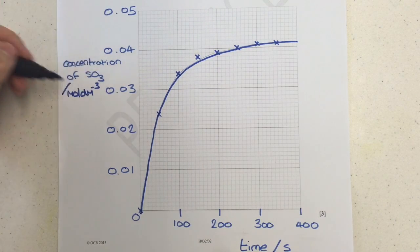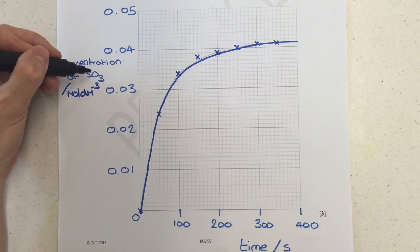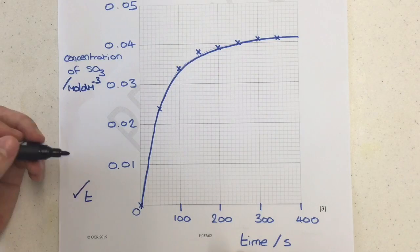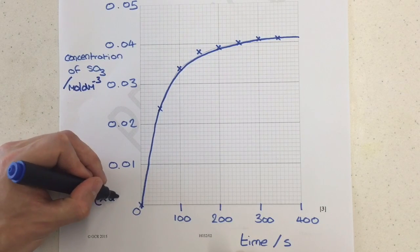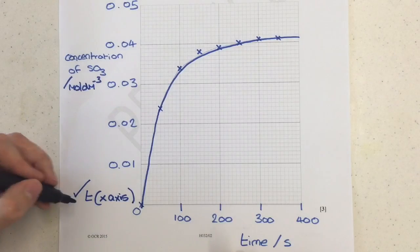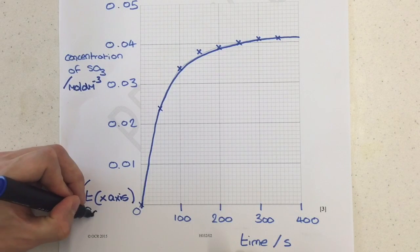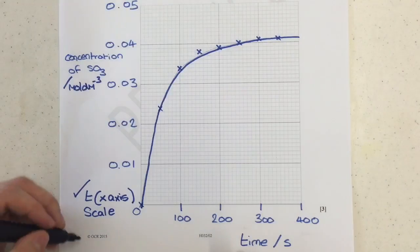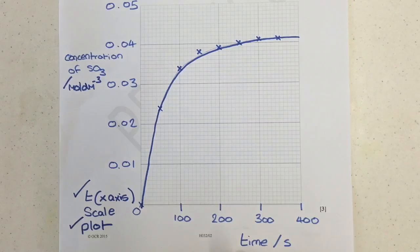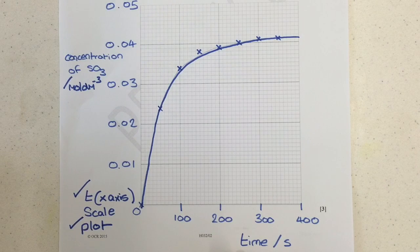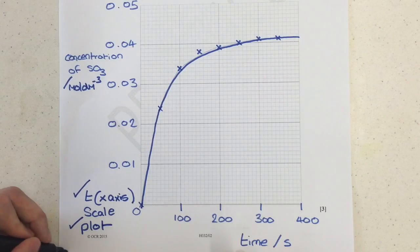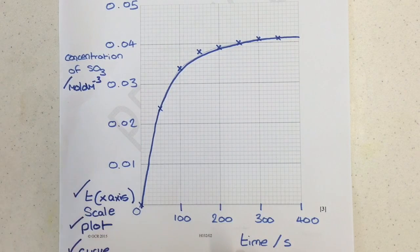You must have the axes labelled here. So I've got concentration in mole per decimeter cubed of SO3, and time in seconds at the bottom. That's your first mark, for getting the time on the x-axis and for making sure you've used a good scale. Your next mark, the second mark, was for all the points being plotted. The graph paper is really clear for this one. You shouldn't be making any mistakes. And the final mark is for the curve of best fit.